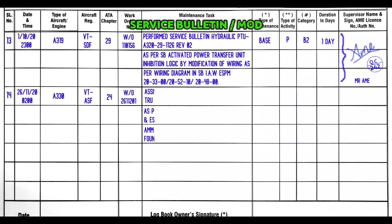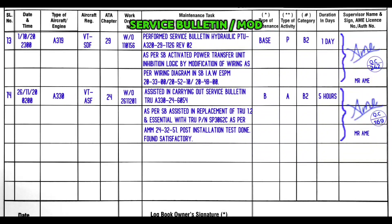Another example for service bulletin or modification — if you are assisting, write: assisted in carrying out service bulletin TRU, then title and number A330-24-6054. Action: as per service bulletin, assisted in replacement of TRU with part number so and so. Give the AMM reference for removal and installation. Then: post installation test carried out, found satisfactory.